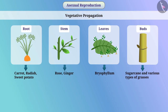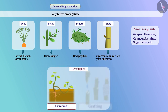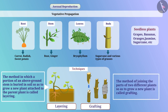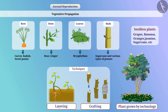Vegetative propagation can be used in agriculture for the production of grapes, bananas, oranges, jasmine, sugarcane, etc. For this, techniques like layering and grafting can be used. Layering is the method in which a portion of an above-ground stem is buried in the soil to grow a new plant attached to the parent plant. Grafting is the method of joining parts of two different plants to grow a new plant. Flowers and fruits can be obtained in less time from plants grown by such technology than from plants grown by seeds.